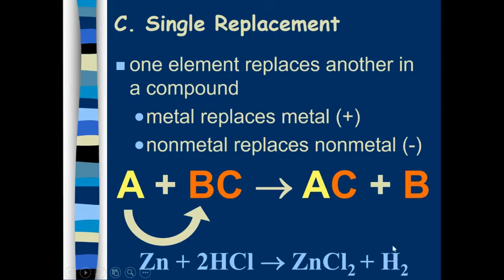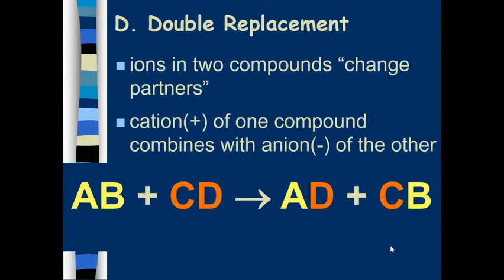In a double replacement reaction, we have ions in two compounds changing places. So the cation of one compound combines with the anion of the other. Remember in our naming unit, we always named the cation first and the anion second. So that means A is going to switch spots with C, and after the reaction, we are going to get A paired with D and C paired with B. You can look at it as A and C are switching places or that B and D are switching places.